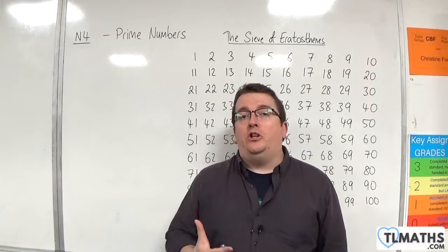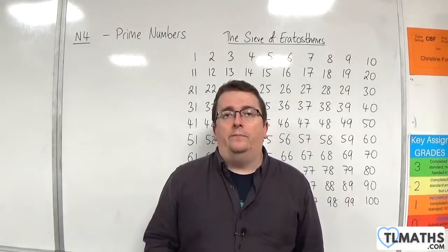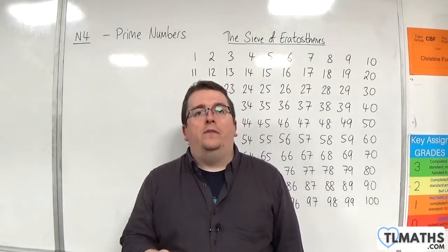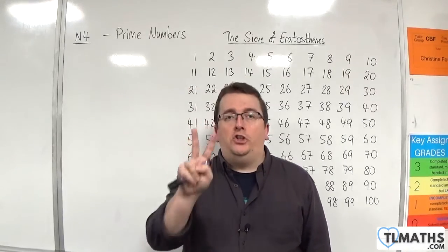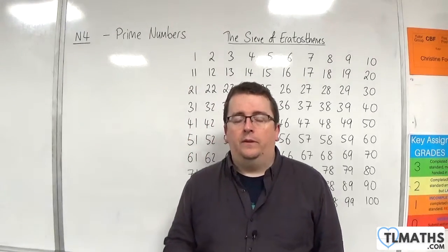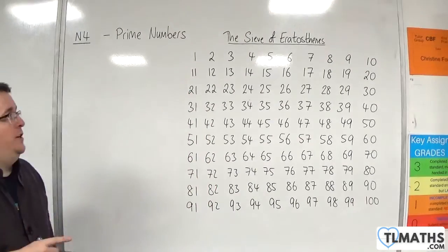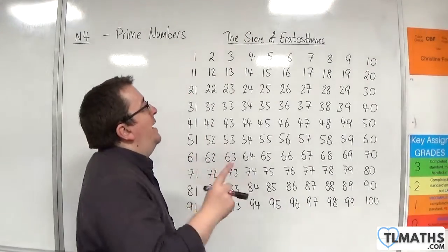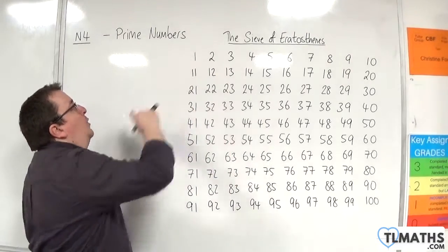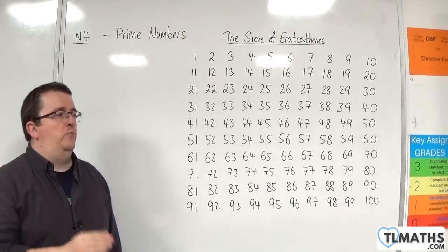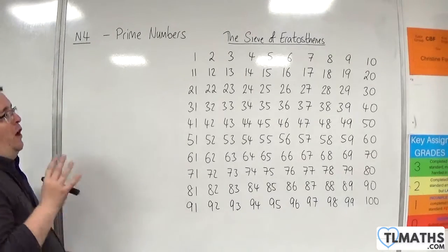In this video I want to introduce you to prime numbers. Now a prime number is an integer that has precisely two factors. Now I want to discuss the first bone of contention that people have and that is the number one which often gets mistaken for being a prime number. It is not a prime number because it only has one factor.